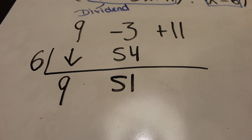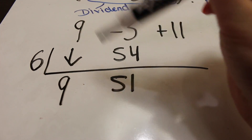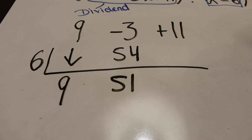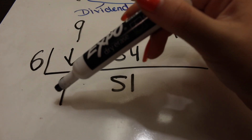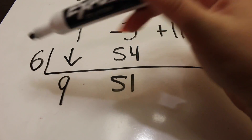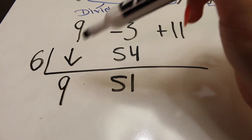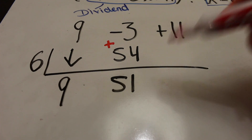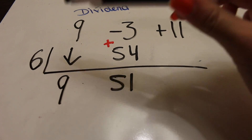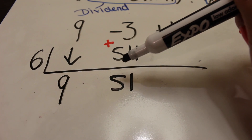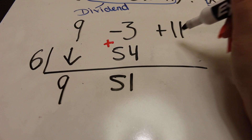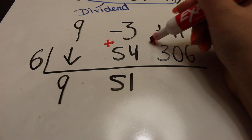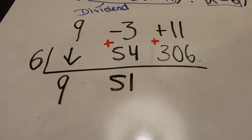Now add negative 3 and 54 to get positive 51, and write it below. Then multiply 6 times 51, which is 306, and put it under the positive 11. Add those two numbers and you get 317.